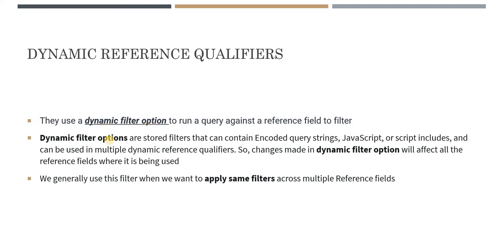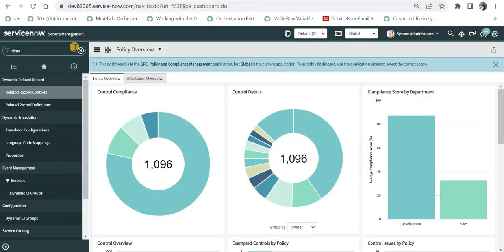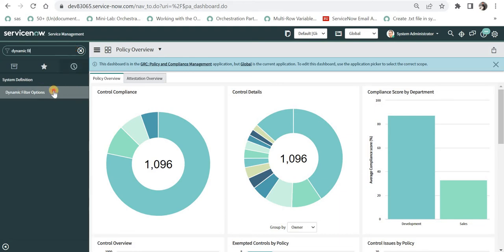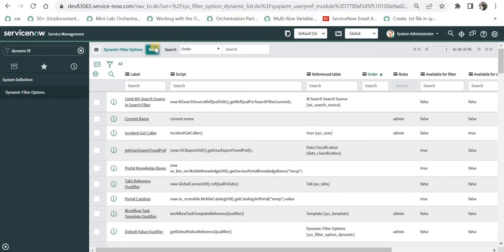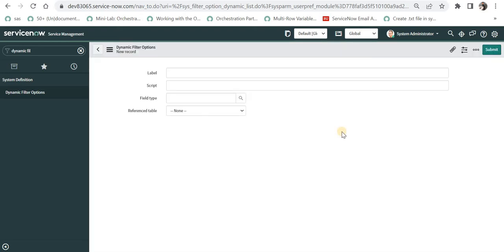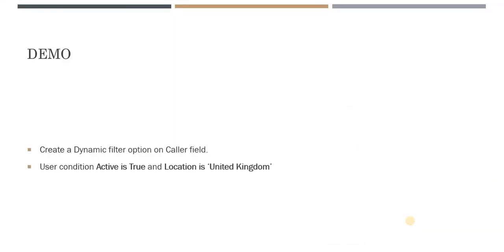This is the best approach when you want to use the same filters again and again. Let's go to ServiceNow under dynamic filter options and create a new one. I will type dynamic filter option in the search and we can see it is a different table. In the demo, we will create a dynamic filter on the caller field to show active users who are also located in the United Kingdom, so there are two filters.